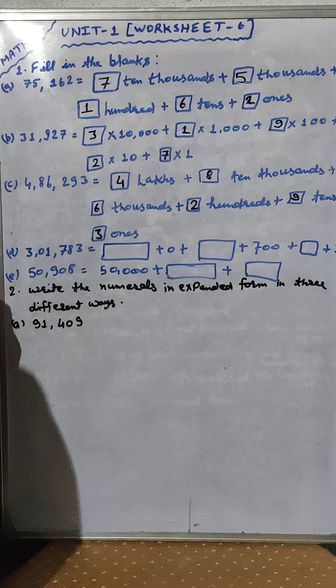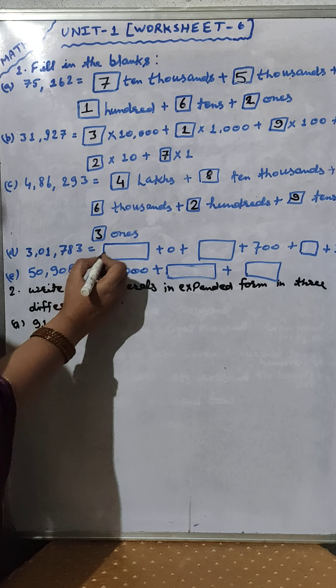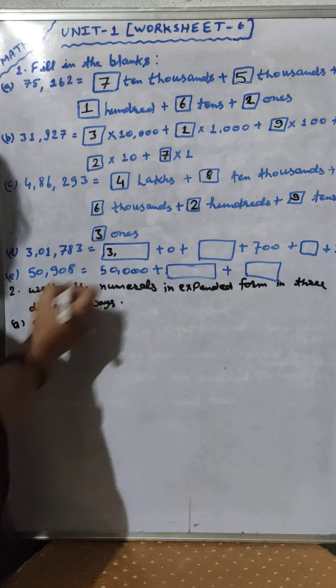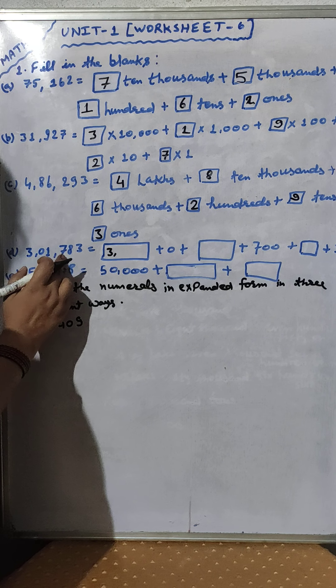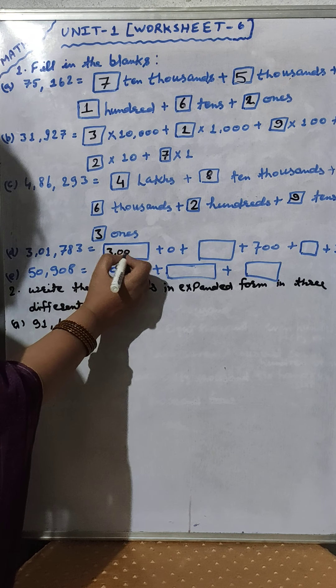Question number D. At first we will write here 3. Then after 1, 2, 3, 4, 5. Put here 5 zeros.